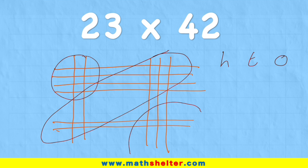Let's look at the 1s first of all. I have 1, 2, 3, 4, 5, 6 intersections. So my answer in the 1s column would be 6.